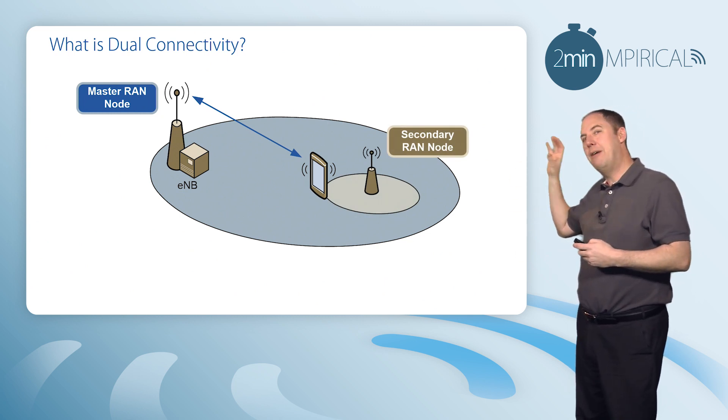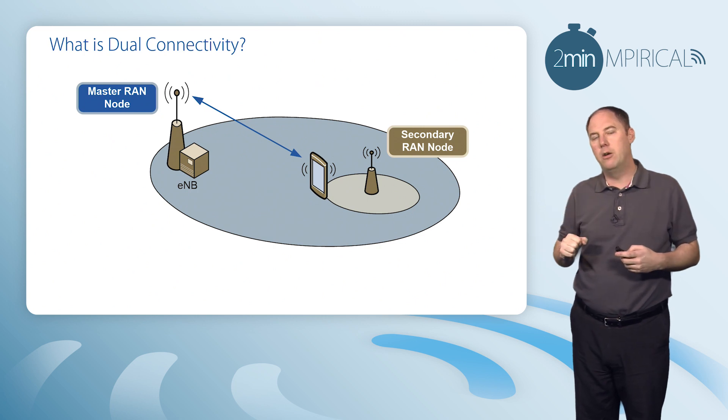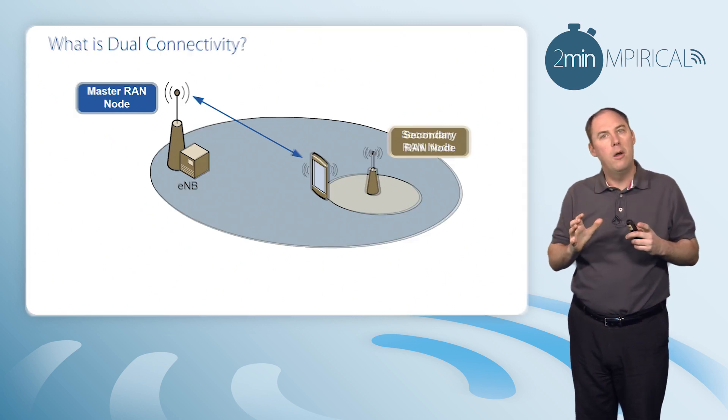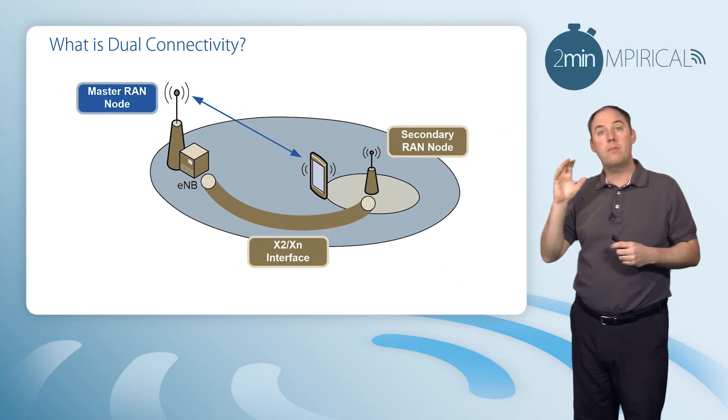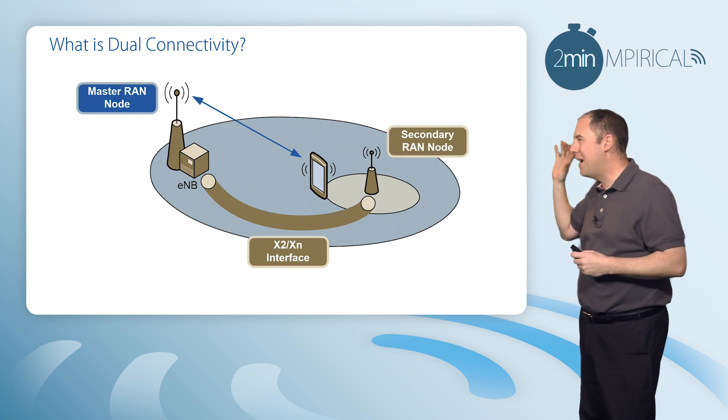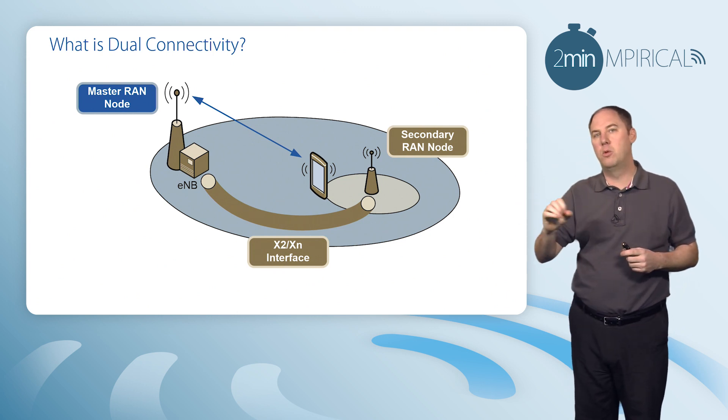Now in this case, we've identified a secondary RAN node, and the difference here is rather than push the mobile towards this small RAN node, we're going to have dual connectivity. So what is that? We're going to take the data, or some of the data, from the cell site, the master RAN node, and pass it on to this small cell.